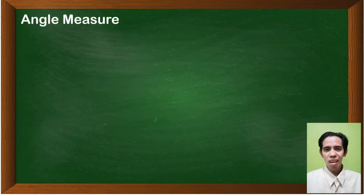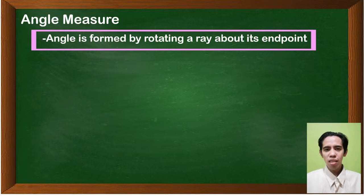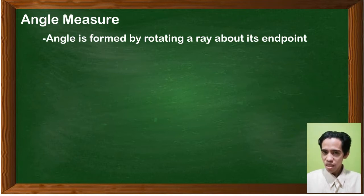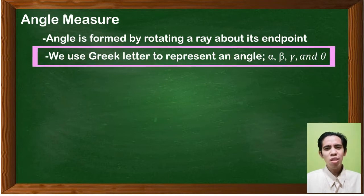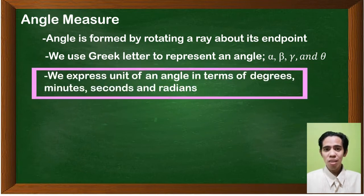We will start with angle measure. An angle is formed by rotating a ray about its endpoint. We name an angle using one capital letter by its vertex, or three capital letters including its vertex, or it can be a Greek letter, which we will be using throughout our discussions. We express the unit of an angle in terms of degrees, minutes, seconds, or radians.